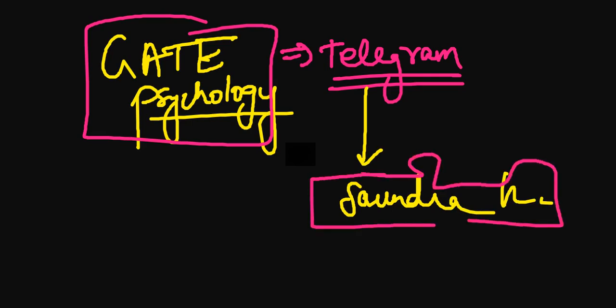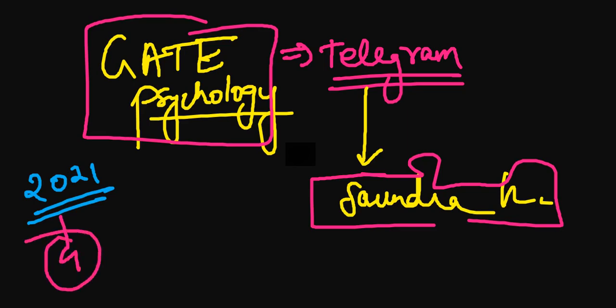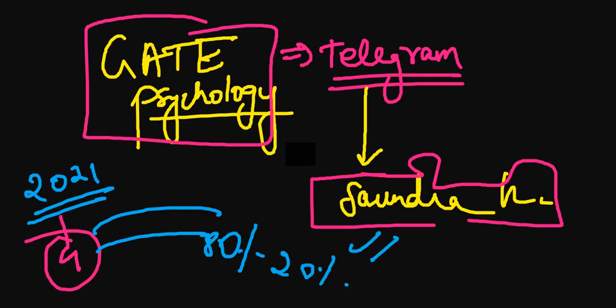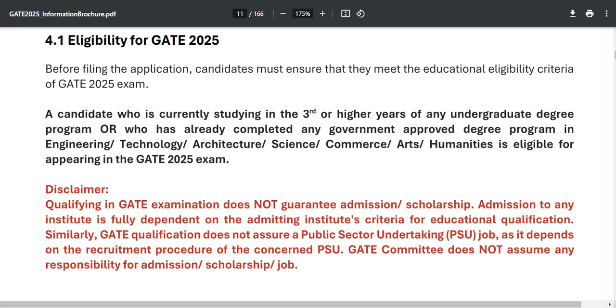In GATE Psychology from 2021 onwards, across all four years, you will find that 80% of questions come directly and 20% indirectly from this particular book. We will discuss everything step by step in upcoming videos. This is the GATE 2025 information brochure, which you can also download.